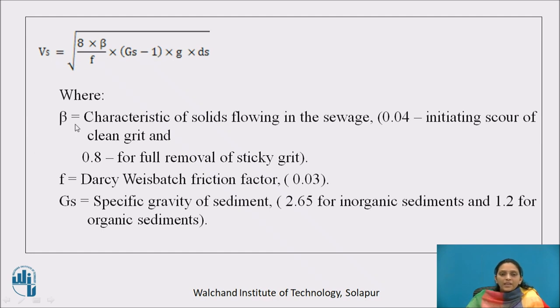Where beta, or we can say K, is the characteristic of solid flowing in the sewage. Its range is 0.04 for initiating scour of clean grit and 0.8 for full removal of sticky grit. The value of beta will vary in this range 0.04 to 0.8. F is the Darcy-Weisbach friction factor, its value is approximately 0.03 for sewage. Specific gravity of sediment ranges from 2.65 for inorganic sediment and 1.2 for organic sediment, indicated by Gs.